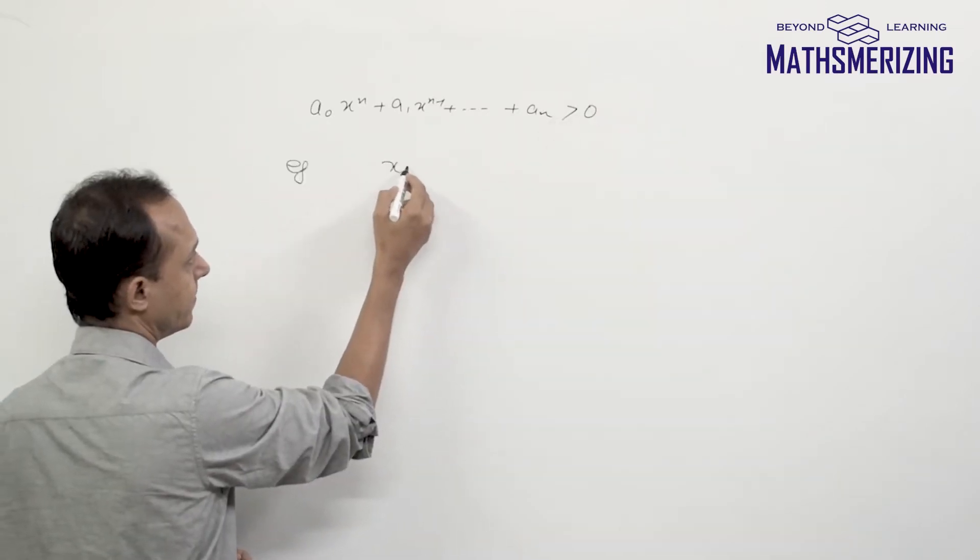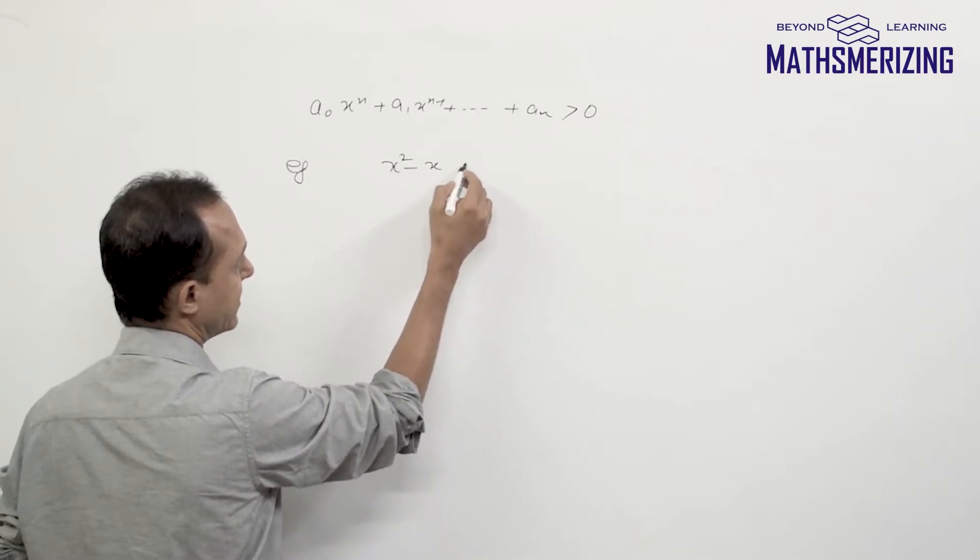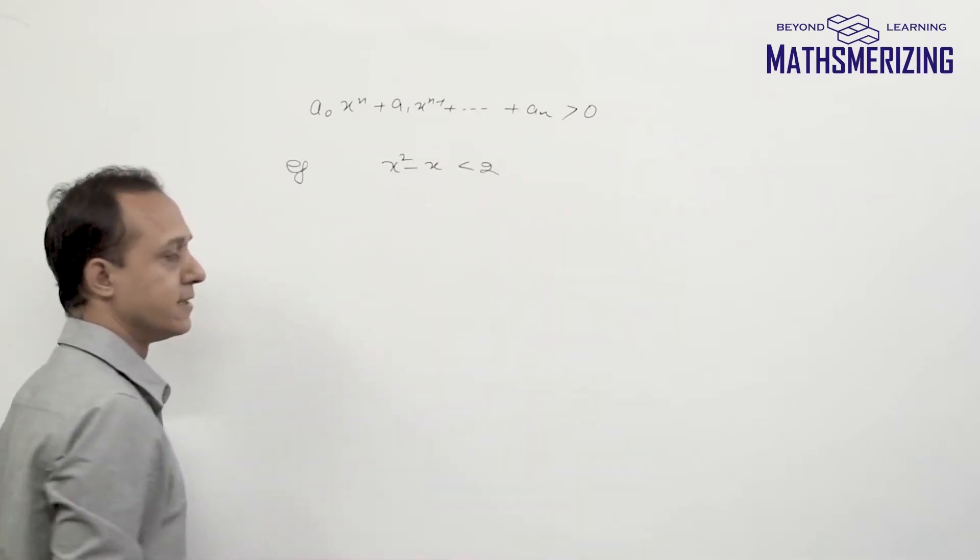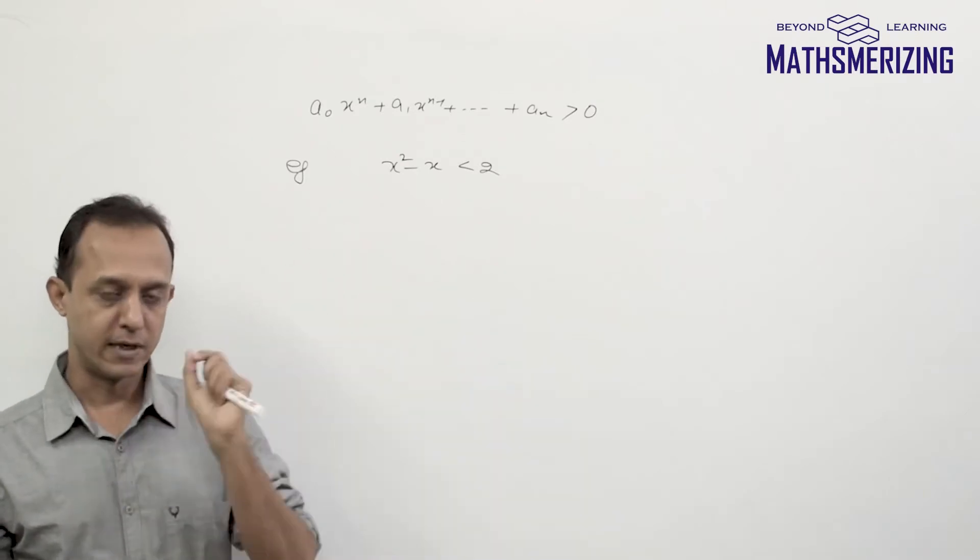Suppose the question is x² - x is less than 2 and we need to solve this inequality.